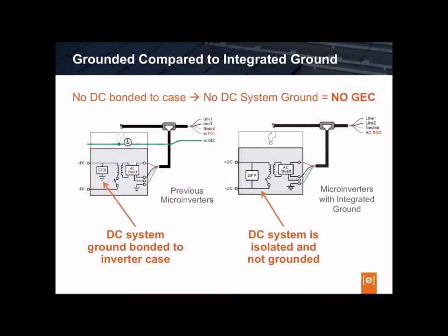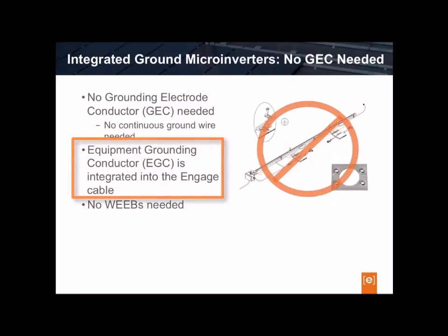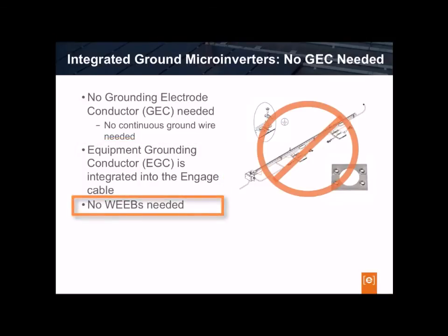Looking at the two microinverter diagrams side-by-side, the difference is clear. Isolating the DC circuit makes all the difference and satisfies NEC requirements for ungrounded PV power systems. Because the DC circuit is isolated and insulated from ground, the Enphase microinverters with integrated ground do not require a grounding electrode conductor, or GEC, connected to each microinverter. And since the microinverter EGC is incorporated into the cabling system, no additional grounding materials such as the continuous copper grounding wire or WEEB grounding washers are needed.